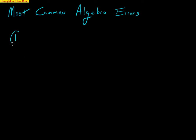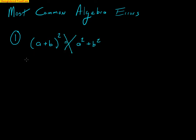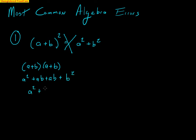Here is probably the number one most common mistake that I see kids make. They see (A + B) squared, and they think that means A squared plus B squared. That is absolutely incorrect. You need to actually take A plus B and multiply it by itself — that's what squaring means — and then use the FOIL method. A times A is A squared; on the outside is AB; on the inside is another AB; and B times B is B squared. When you combine this, you get A squared plus 2AB plus B squared.